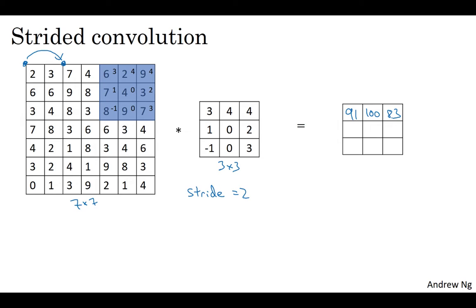And now when you go to the next row, you again take two steps instead of one step. So I'm going to move the blue box over there, skipping over one of the positions. And then this gives you 69. And now you step over two steps. This gives you 91 and so on. So 127, and then for the final row 44, 72, and 74. So in this example, we convolve with a 7 by 7 matrix with a 3 by 3 matrix, and we get a 3 by 3 output.